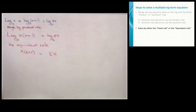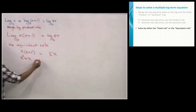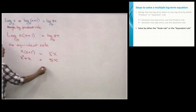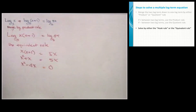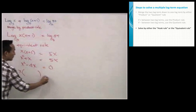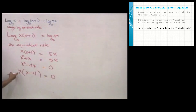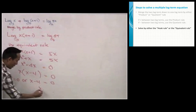Now solve: distribute x — x squared plus x equals 5x. Rearrange: subtract 5x from both sides, giving x squared minus 4x equals 0. Solve using the zero factor property: factor out x, getting x(x minus 4) equals 0. So x equals 0 or x minus 4 equals 0, meaning one solution is 0 and the other is 4.